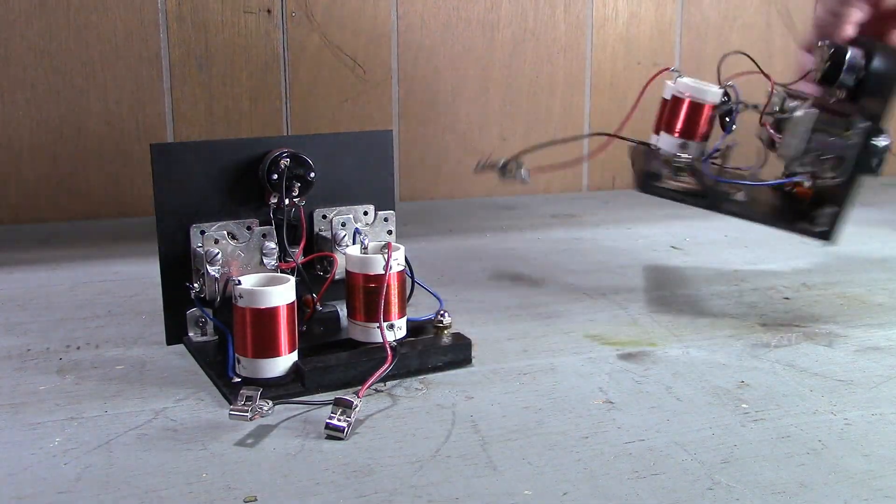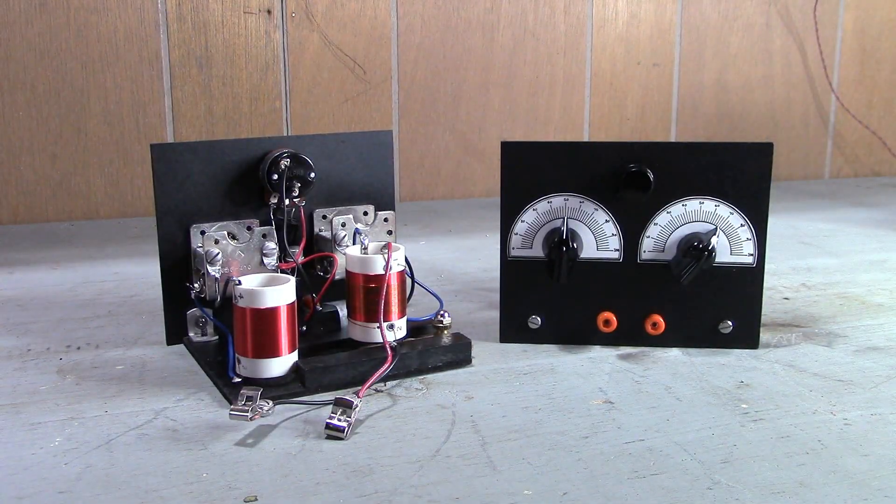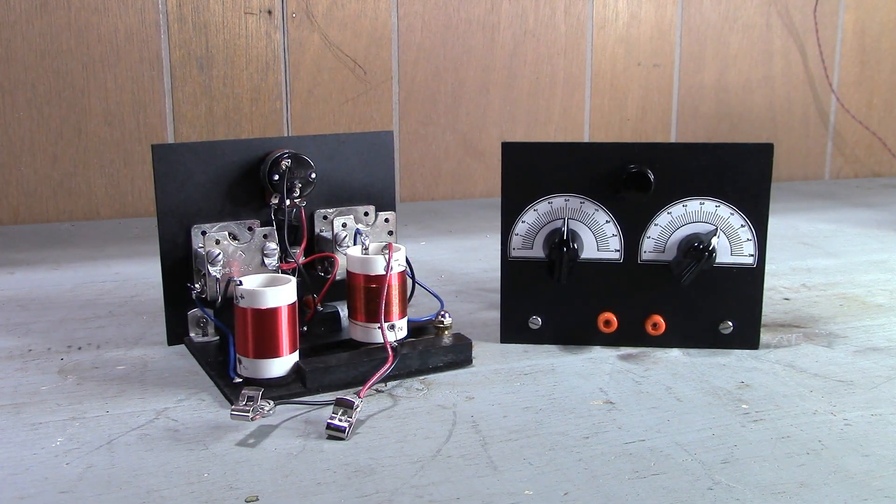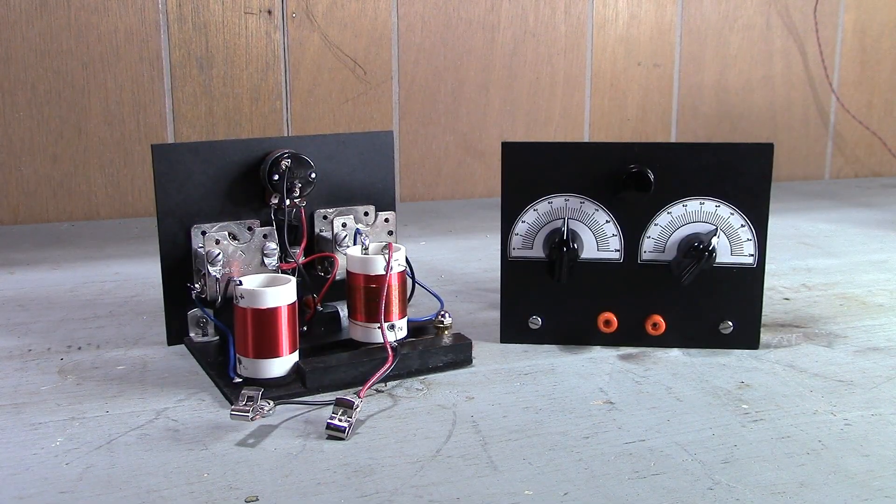These are reproductions of the Modern Radio Laboratories No. 18 Selective Diode Transistor Radio Kit, designed by Elmer G. Osterhout in the late 1950s or early 1960s.